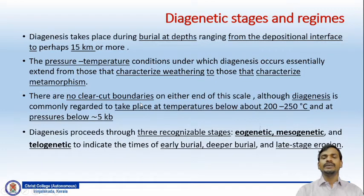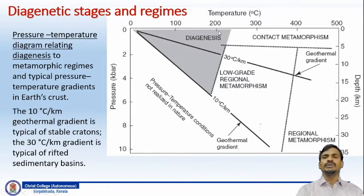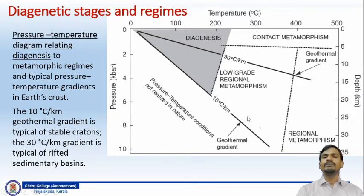These stages indicate times of early burial, deep burial, and later stage erosion of sediments. Here I am showing a pressure-temperature diagram relating to diagenesis. The realm of diagenesis, as seen in this figure, is between surface conditions and up to about 250 degrees Celsius and 5 kilobar pressure. Beyond that lower limit of diagenesis, you have contact metamorphism, low-grade regional metamorphism, and other types of metamorphism.